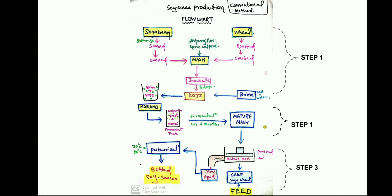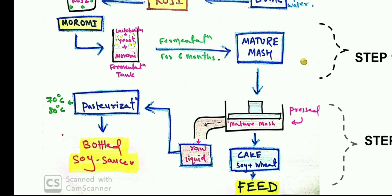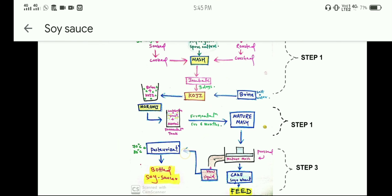This completes step two. In step three, the mature mash is pressed by a huge press to separate out the liquid, which is raw soy sauce, from a residue containing wheat and soybean solids. This residue can be used as animal feed. This concludes the conventional traditional brewing method of soy sauce production.